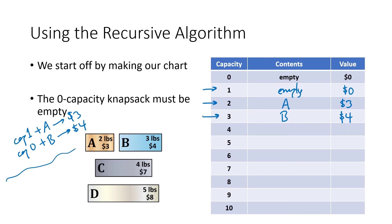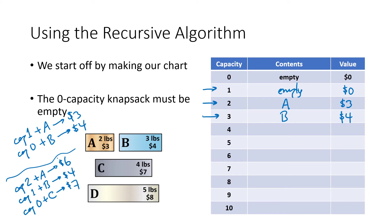For the best capacity-four knapsack, the options are: a capacity-two knapsack plus an A (two A's = six dollars), a capacity-one knapsack plus a B (empty plus B = four dollars), or a capacity-zero knapsack plus a C (empty plus C = seven dollars). The best value is seven dollars, so the optimal capacity-four knapsack contains a single C worth seven dollars.